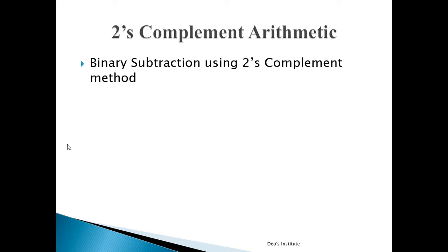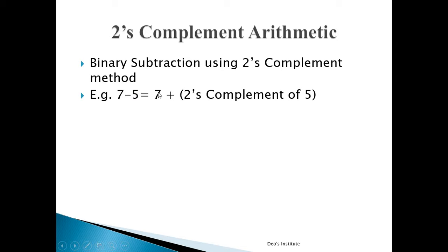Now we will see 2's complement arithmetic. We use 2's complement arithmetic in binary subtraction. When you want to subtract any number from another, instead of subtracting directly, we use the 2's complement of that number. For example, 7 minus 5: instead of subtracting 5 from 7, we add the 2's complement of 5 to 7. So 7 − 5 = 7 + (2's complement of 5).